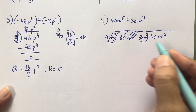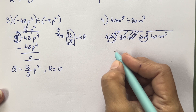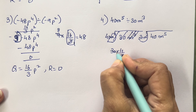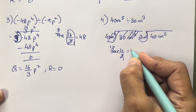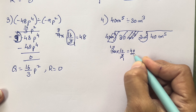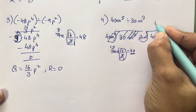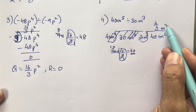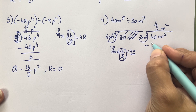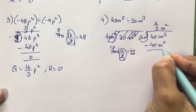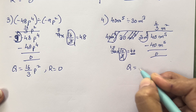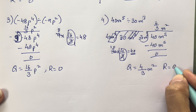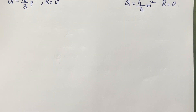So what we have to do is multiply 4 upon 3. 10 into 4 is going to give you 40. So what we have to take is 4 upon 3m². 3 is over here, and 3 plus 2 will give you 5. We have got 40m⁵, remainder 0. So quotient is 4/3 m², and remainder is 0.